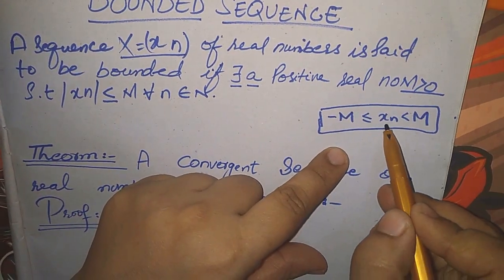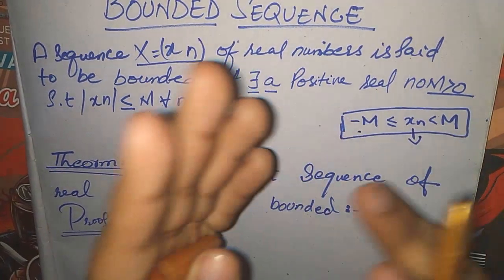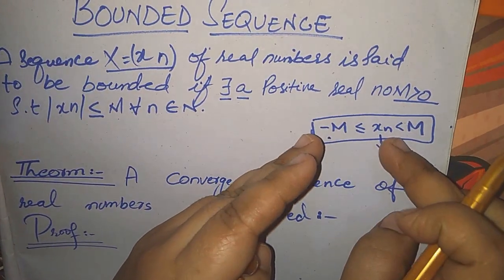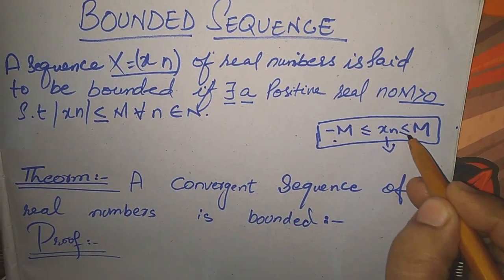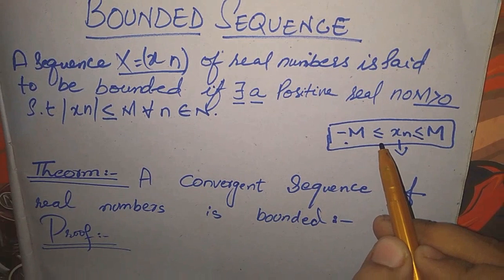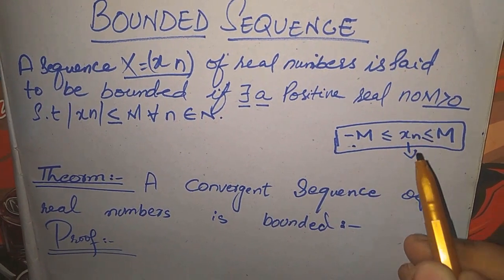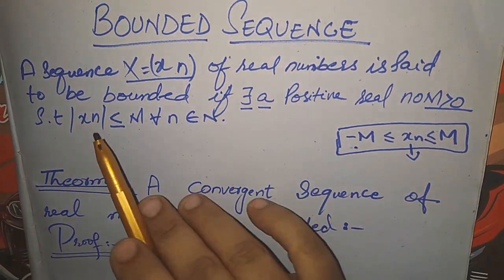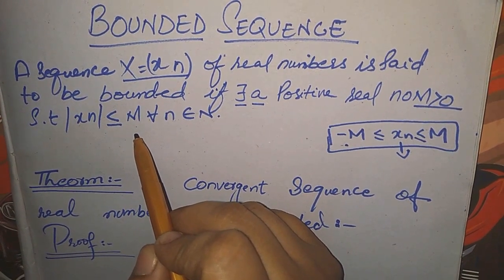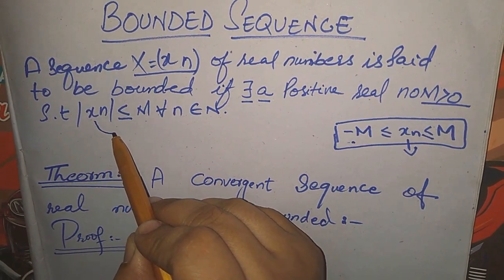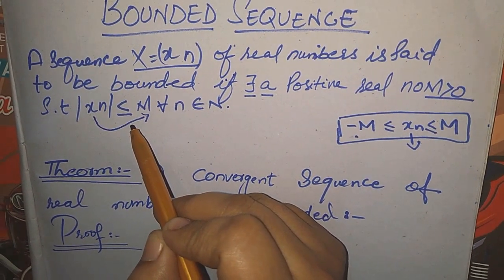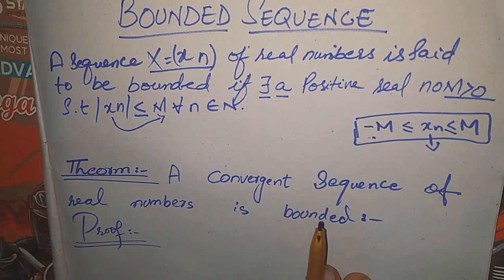It means that every term xn in the sequence is restricted — it is bounded between -M and M. That is, xn is not greater than M and not less than -M. So the sequence is bounded in the sense that each term will be less than or equal to M for all n in the set of natural numbers.